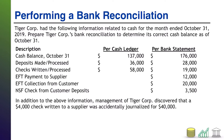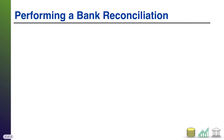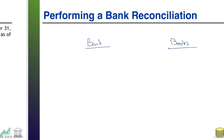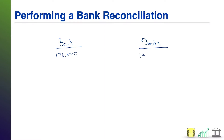Welcome back. I'm going to move to my blank slide and set up a column for my bank and a column for my books — this is where I'm going to do my reconciliation. Every bank reconciliation starts off with the ending cash balance for the period you are reconciling. Our end date is October 31, 2019. Per the cash ledger we had $137,000; per the bank statement we had $176,000. These are the ending balances per each source of information.